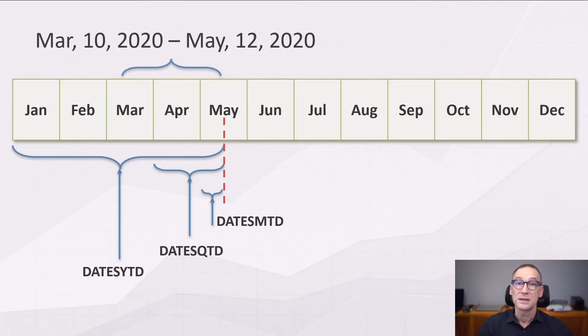If the selection contains multiple dates, like in this case where we have dates starting from the 10th of March up to the 12th of May, then the period-to-date calculations always use the last date as the reference. So regardless of when your period starts, all these functions use the 12th of May and return the YTD, the QTD, or the MTD using the 12th of May.